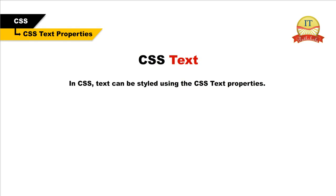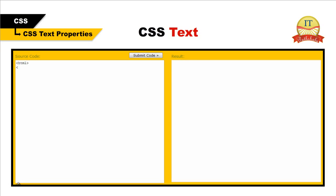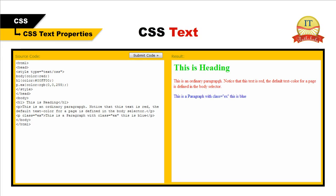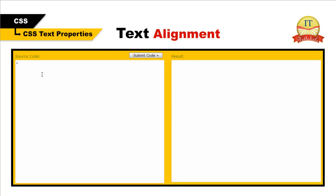CSS text. In CSS, text can be styled using the CSS text properties. In this lesson you will learn how to use each CSS text property and how it looks in a browser. Text color — the color property is used to set the color of the text. Text alignment — the text-align property is used to set the horizontal alignment of a text. Text can be centered or aligned to the left or right or justified. When text-align is set to justify, each line is stretched so that every line has equal width and the left and right margins are straight, as you may have seen in magazines and newspapers.